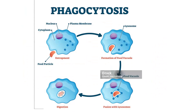For phagocytosis, taking a food particle as an example, the process begins with entrapment of the particle, followed by formation of a food vacuole. After the food vacuole is formed, it fuses with lysosomes. Lysosomes are organelles that contain digestive proteins that help in breaking down or degrading foreign materials or antigens. Fusion with lysosomes causes digestion to occur because lysosomes contain digestive enzymes, and that is how the cell gets rid of unwanted materials.